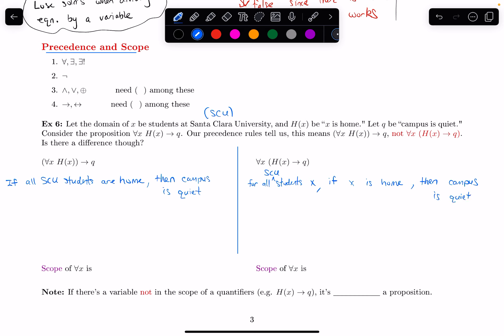So if we think about what this is saying, this is saying for any SCU student, call them X, we have the following rule: if that student X is home, then campus is quiet. And this rule needs to be true for any SCU student.